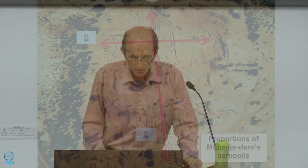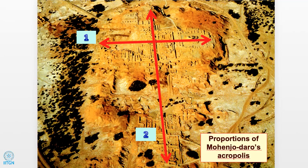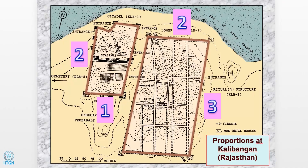The Harappans were extremely particular about proportions. For example, the Acropolis of Mohenjo-daro is exactly twice as long as it is broad. At Kalibangan, a smaller city on the bed of the Sarasvati River in Rajasthan, the upper part of the city — the Acropolis or Citadel — has the same proportion as Mohenjo-daro: twice as long as it is wide.